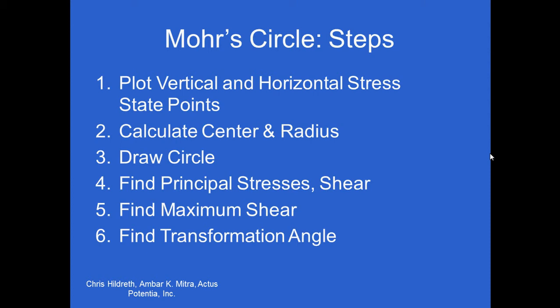Here are the steps you're going to follow when working with Mohr's circle. Before you even get to step one, you need to have your stress element, which will have your stress values and your shear values. From there, you can plot two points, a vertical and horizontal point. Then you can calculate the center and the radius and draw the circle. With your drawn circle, you can find the main uses of Mohr's circle: the principal stress values and the shear, the maximum shear, and the transformation angle.